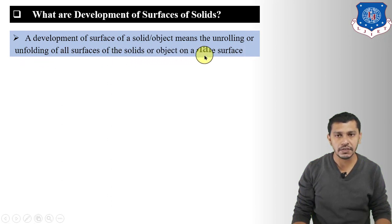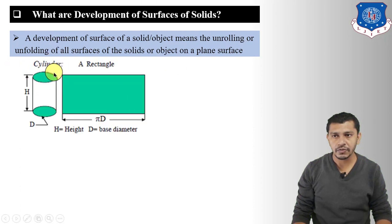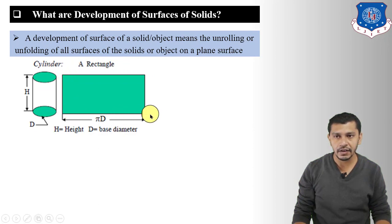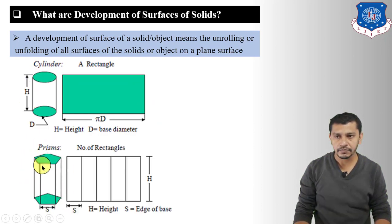Let us see the development of surfaces of different solids. First is the cylinder. If we unfold the surface of the cylinder it will be a rectangle having length equal to π×D, which equals the circumference of the base circle or top face circle, and width equal to the height of the cylinder.